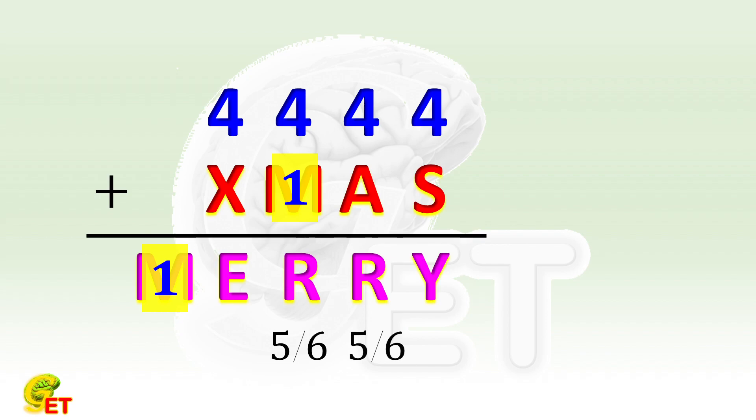If they are both 6, the ones digit of the result of 4 plus A is 6. Depending on whether there is a carry from the next place, A can only be 1 or 2.